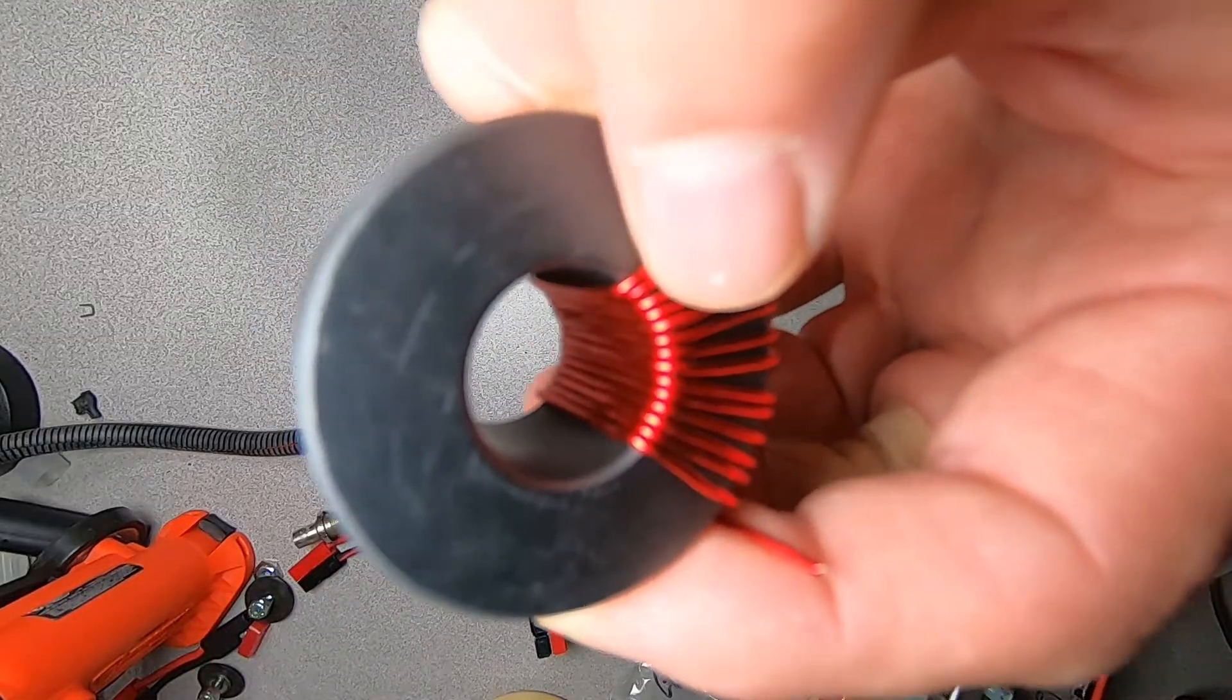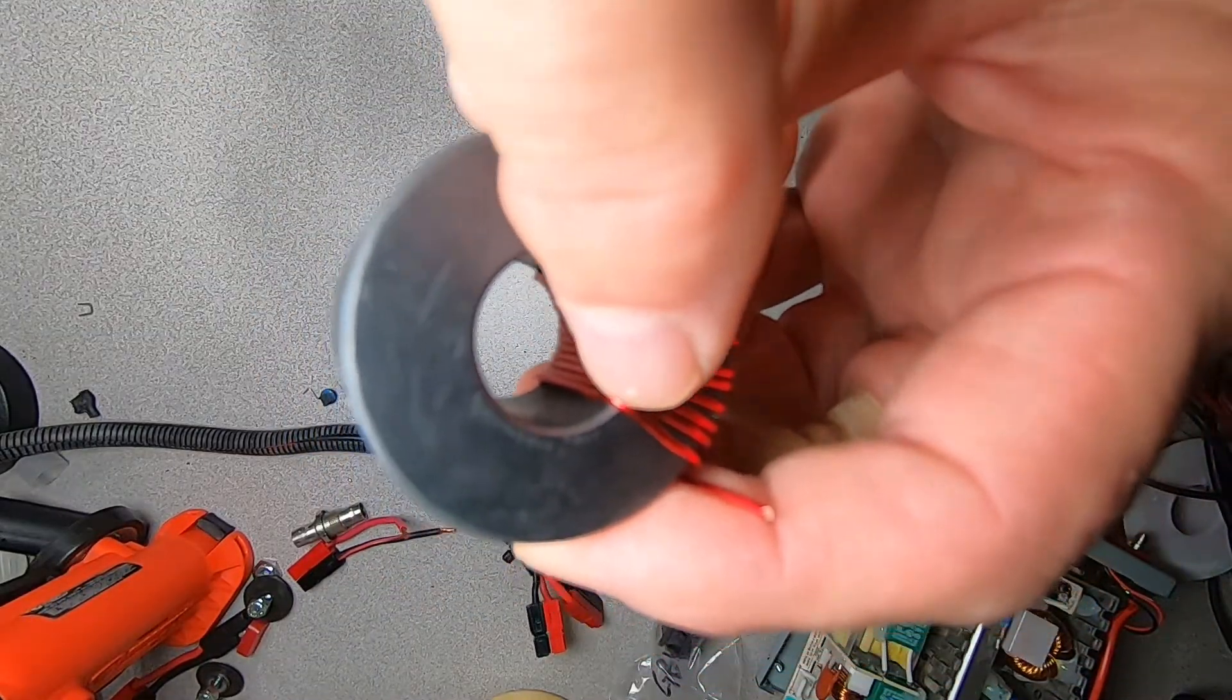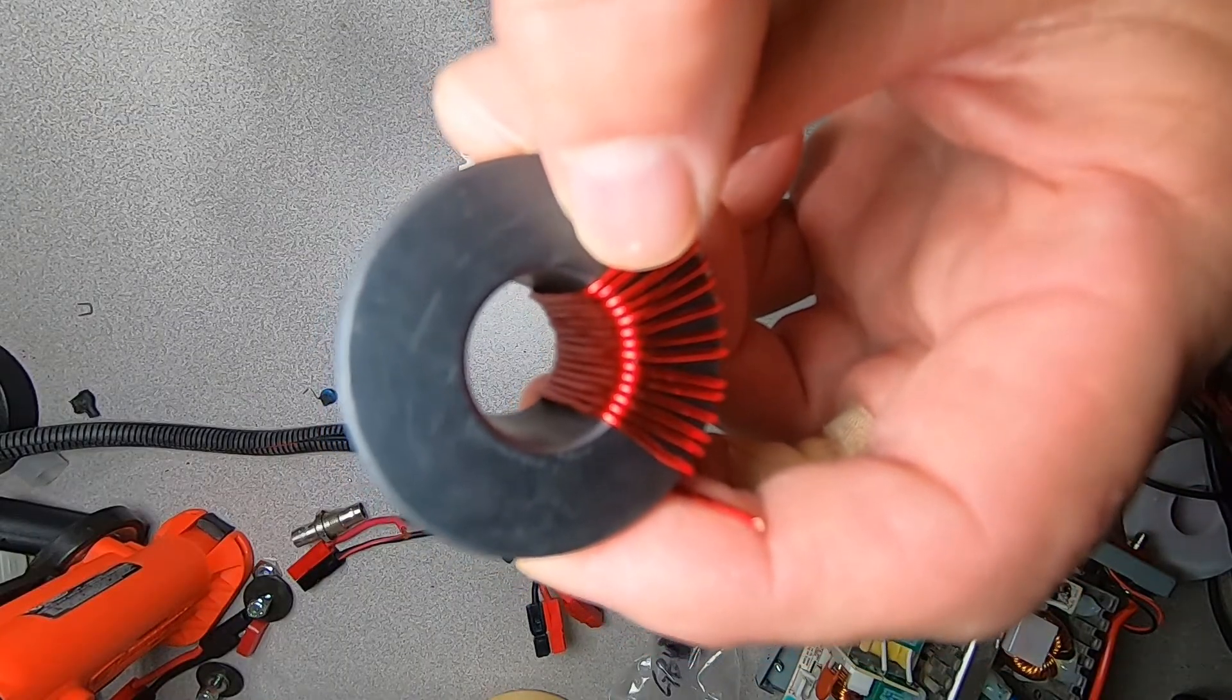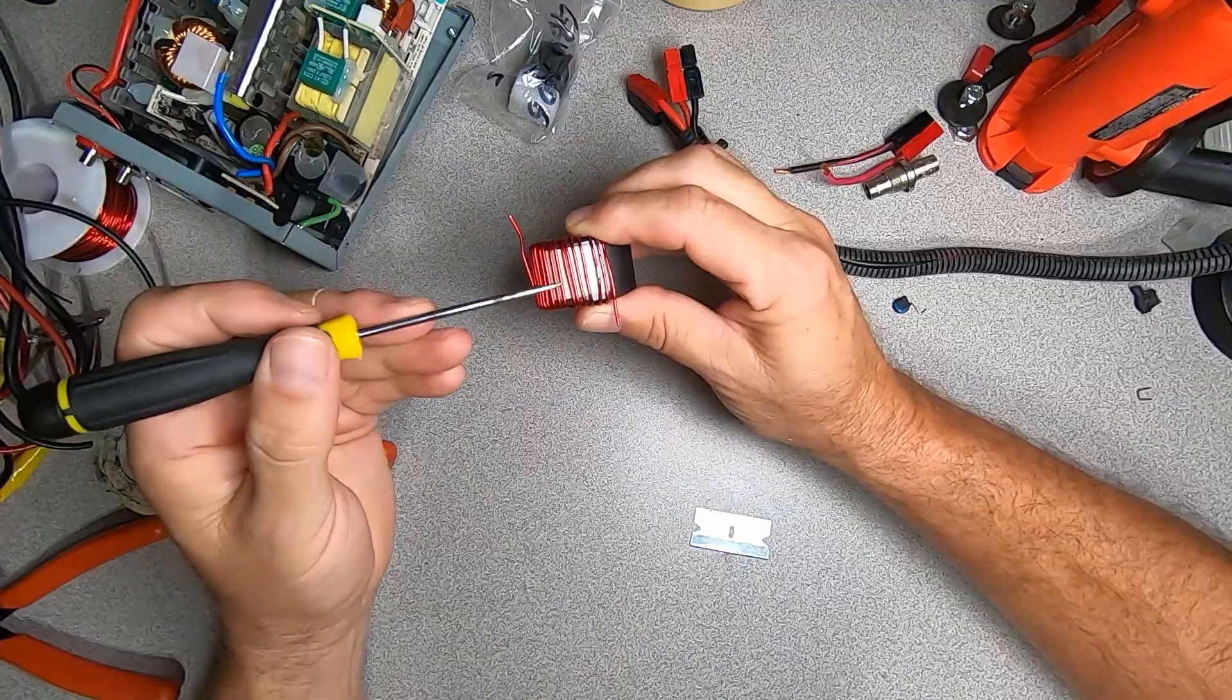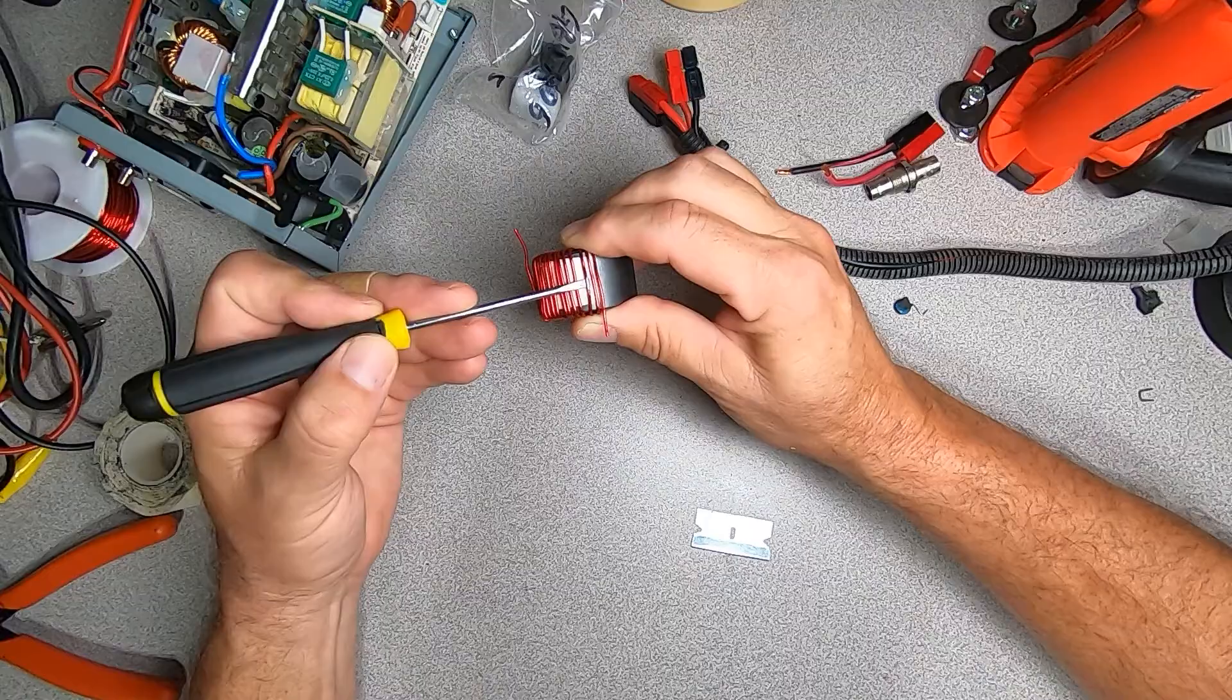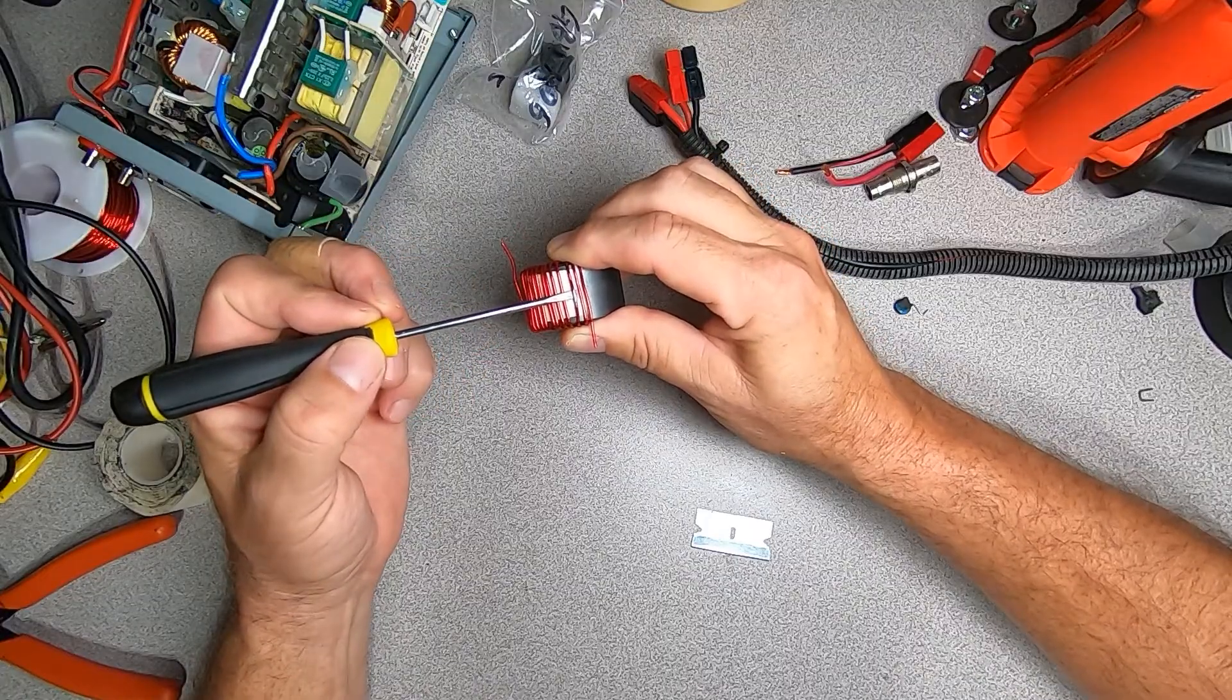When you've completed winding, you should have 14 closely spaced turns. Take a small tool under where your feed point is.